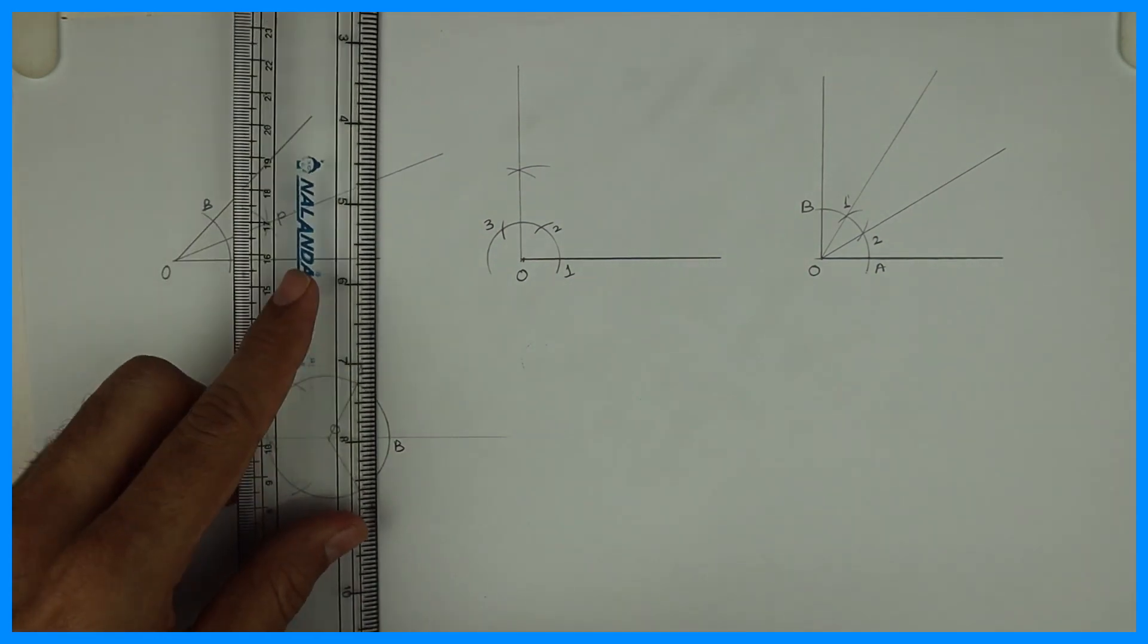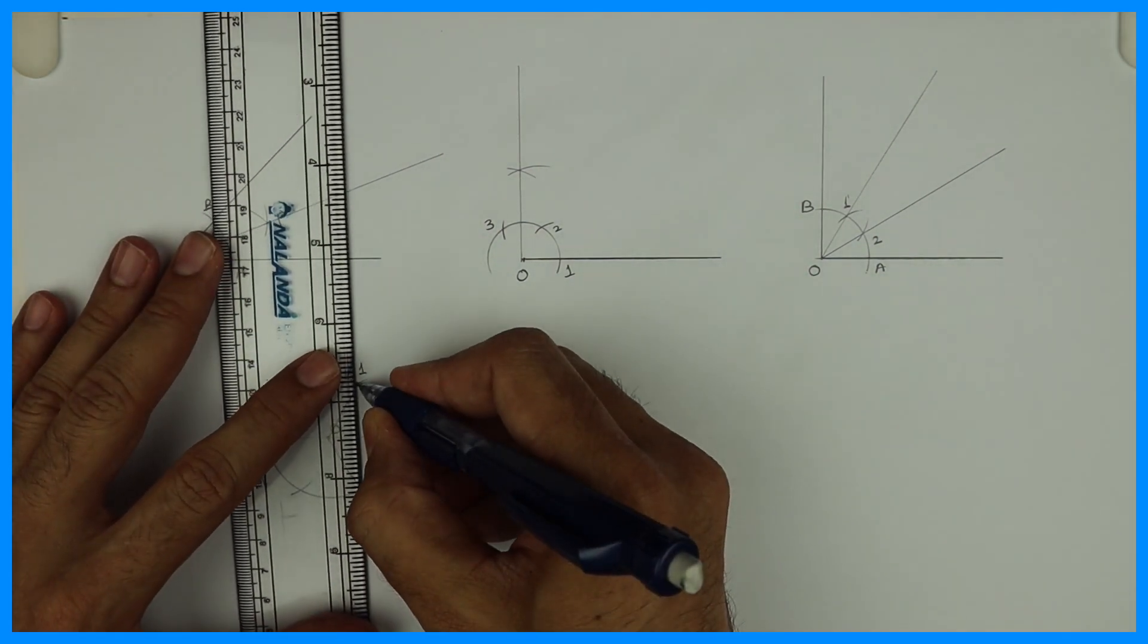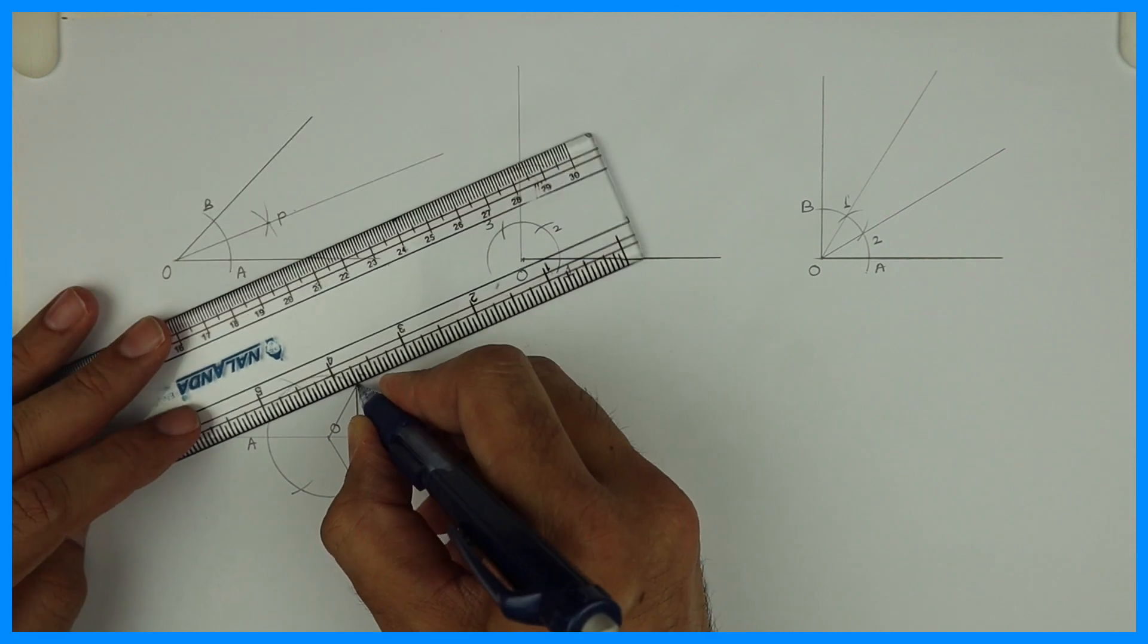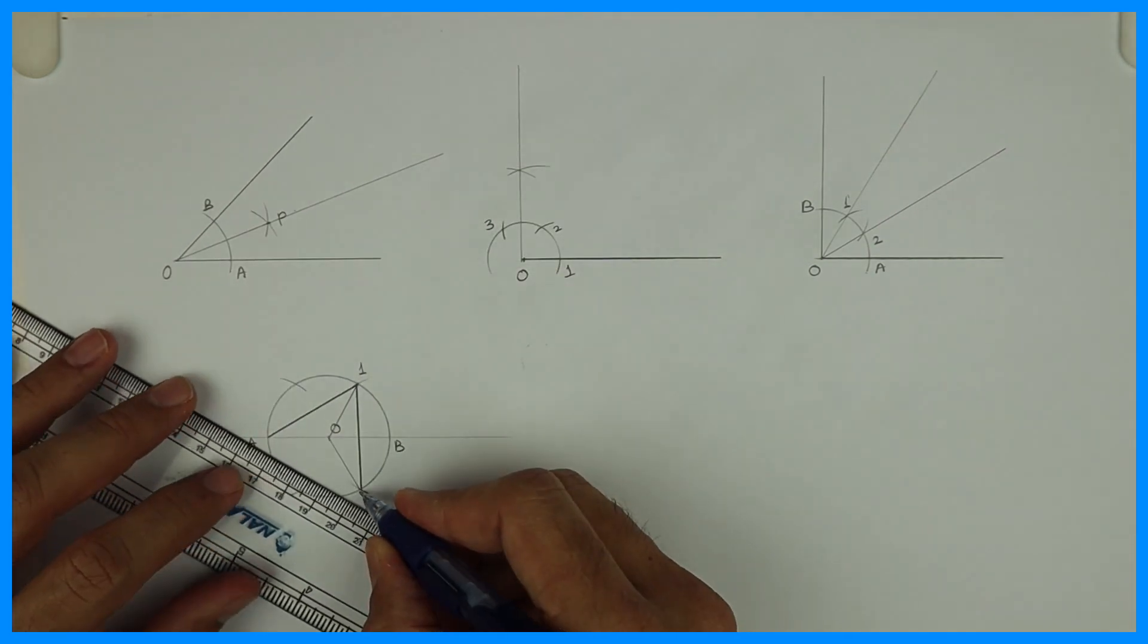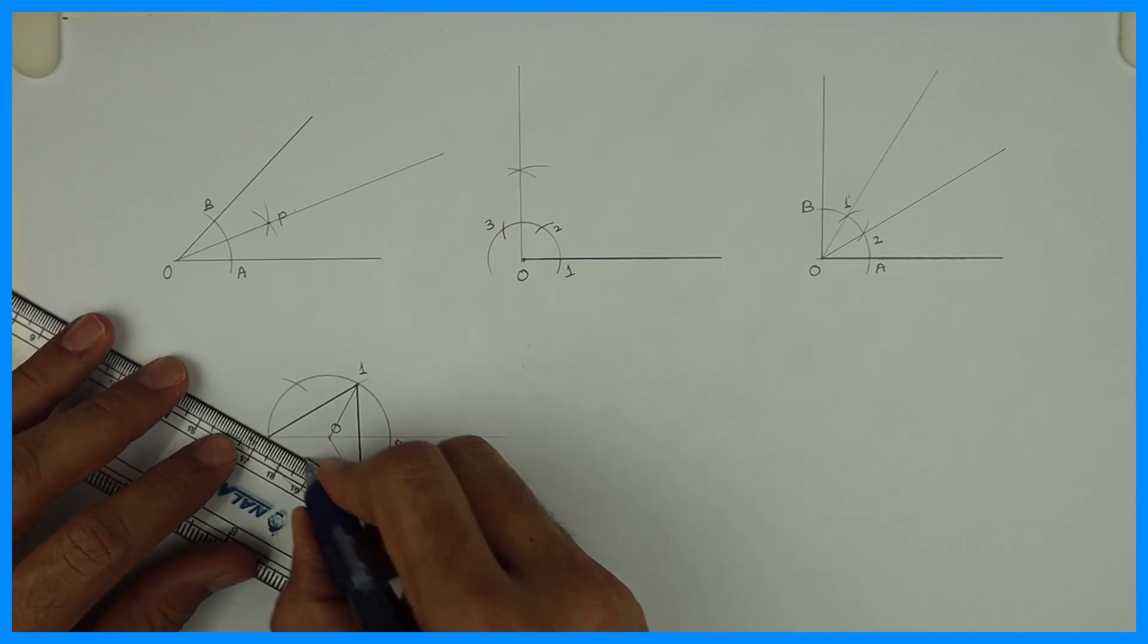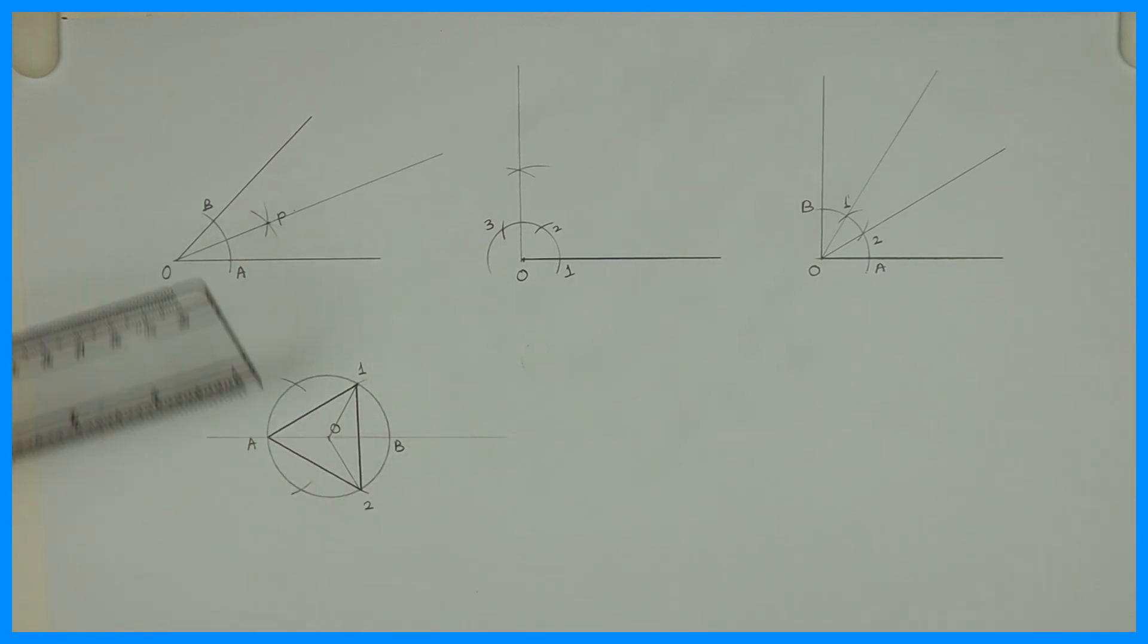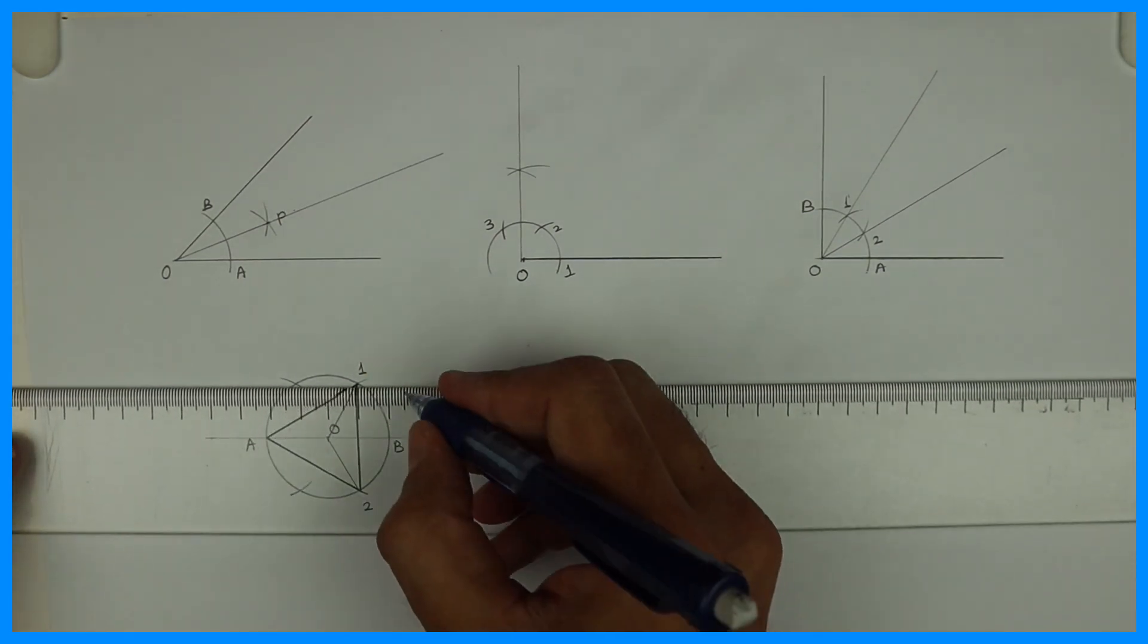Right? So now when you join 1 to 2, A to 1, A to 2. So you'll get the required triangle inside a circle.